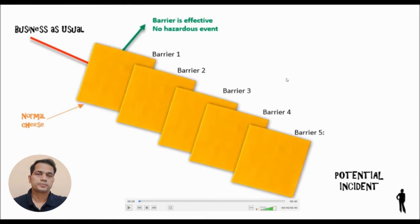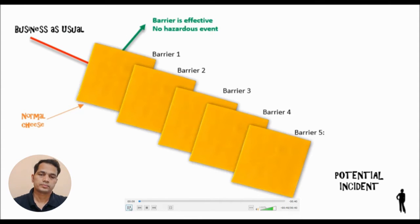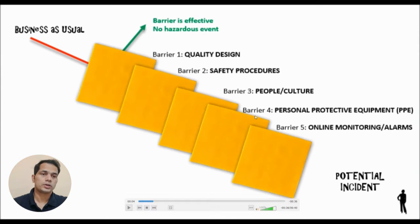These are the various barriers: barrier one, two, three, four, and five — a total of five barriers. If the hazard stops at the first barrier, no incident or accident will take place. For example, barrier one is quality design, barrier two is safety procedures and our SMS system, barrier three is the people culture on board, barrier four is personal protective equipment, and barrier five is the various alarms and monitoring systems we have on board.